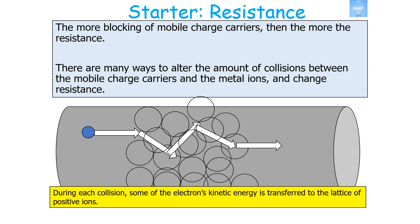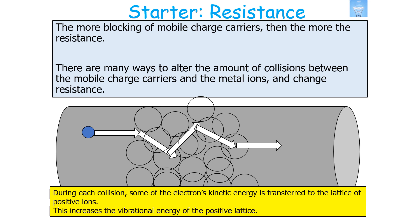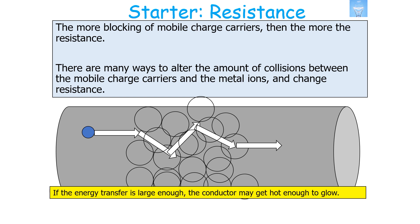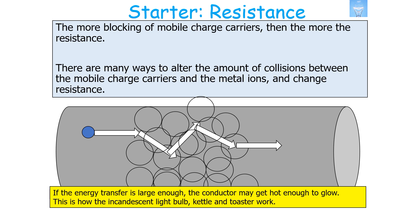There are many ways to alter the amount of collisions between the mobile charge carriers and the metal ions, and therefore change resistance. During each collision, some of the electron's kinetic energy is transferred to the lattice of the positive ions in the metal, increasing their vibrational energy and therefore increasing the temperature of the metal. If this energy transfer is large enough, the conductor may get hot enough to glow — this is how the incandescent light bulb, the kettle, and the toaster work.